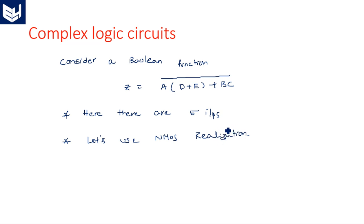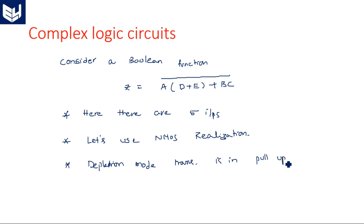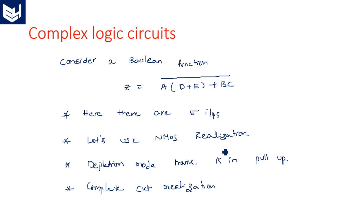In the next video I will explain the same with CMOS realization. NMOS realization means: in the pull-up, a depletion mode transistor is used. This depletion mode transistor is connected between VDD and the output — only one transistor. The complete circuit realization, which gives you the perfect Boolean function, is done in the pull-down network.